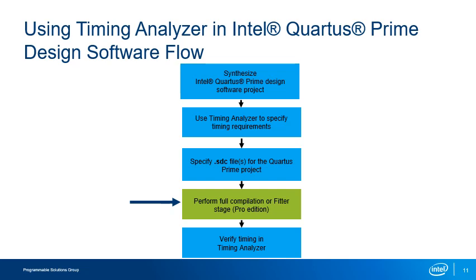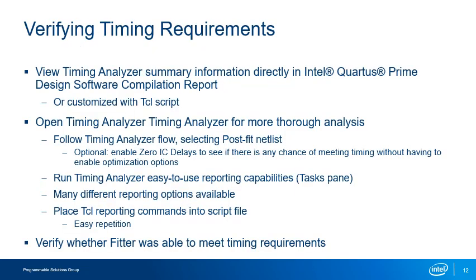Once the Timing Analyzer settings are configured in the Intel Quartus Prime software, perform a full compilation. The fitter will be guided by the SDC timing constraints. If you are using the Intel Quartus Prime Pro Edition, either perform a full compilation or compile up to the fitter stage desired — either planning, placement, or routing. After compiling, use the extensive reporting capabilities of the Timing Analyzer tool to verify whether you've met your timing requirements. During compilation, timing summary reports based on the post-fit netlist are generated and appear automatically in the Intel Quartus Prime compilation report. For more detailed timing verification, follow the steps for using the Timing Analyzer reporting features mentioned earlier. When creating the timing netlist, use the post-fit netlist option if using the Lite or Standard Edition, or the desired fitter snapshot if using the Pro Edition.